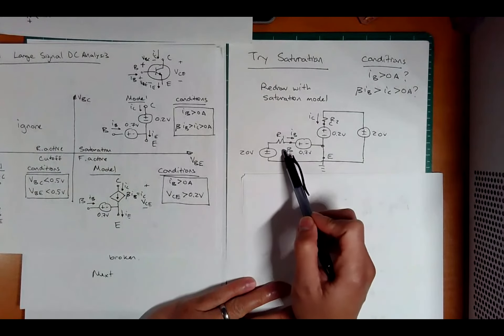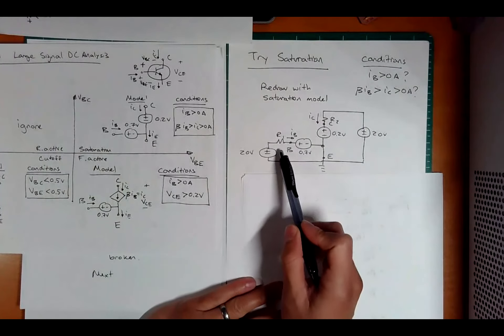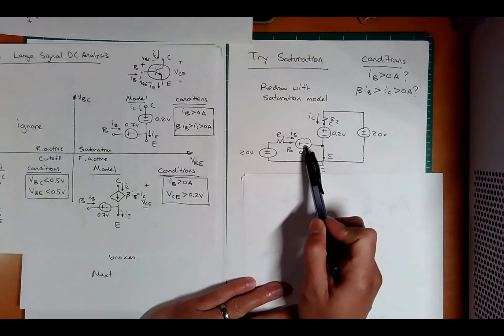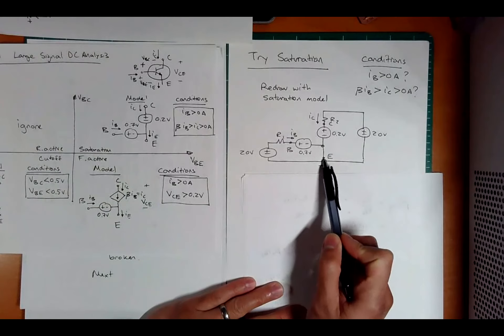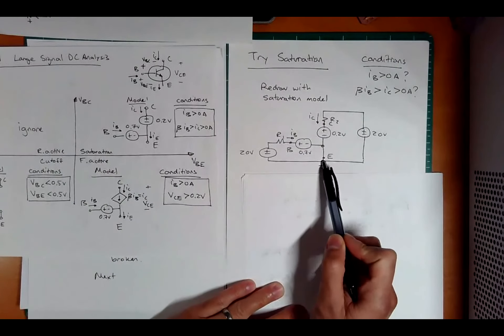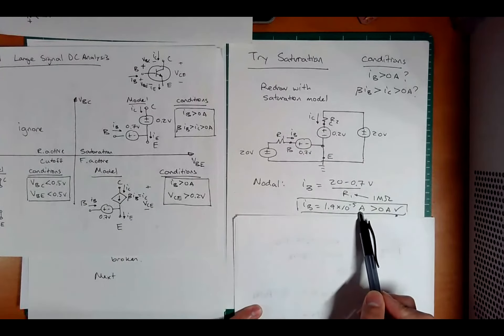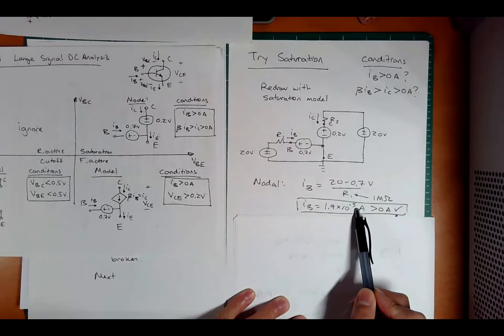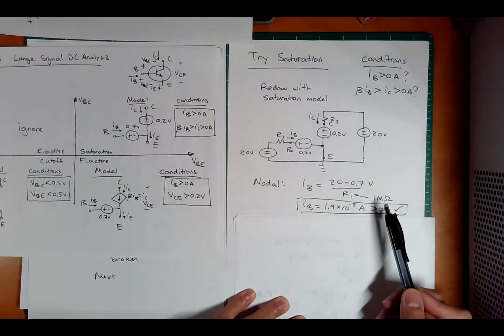So let's do this. If I want to calculate IB, that's pretty easy. That's just a nodal Ohm's law. So IB is 20 minus 0.7 over R1, and that's the reason why this is 0.7 because this goes to ground. This is 1.9 times 10 to the minus 5. Very small, but positive.